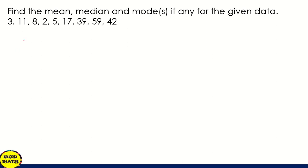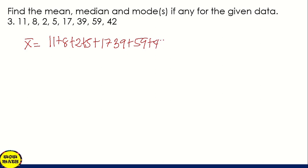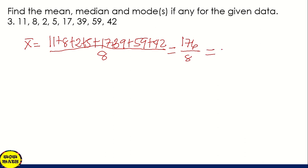First, let us solve the value of the mean. In solving the mean, we simply add all the given values and then divide by the number of data. Since we have 8 values, we divide by 8. So 11 plus 8 plus 2 plus 5 plus 17 plus 39 plus 59 plus 42 gives us 176 over 8. The answer is 22.